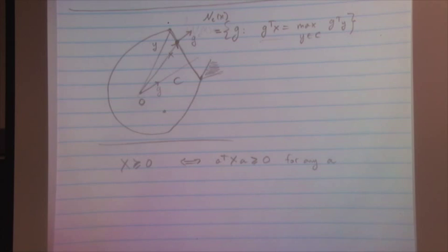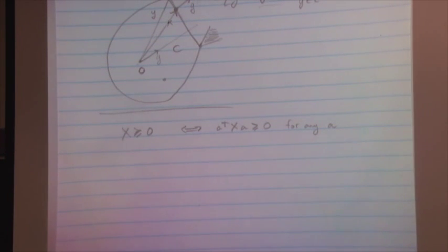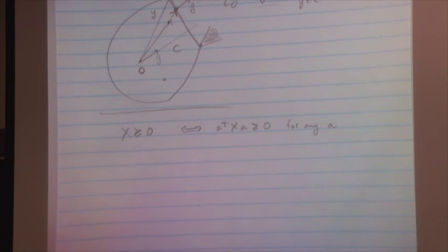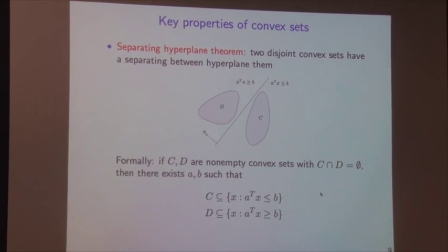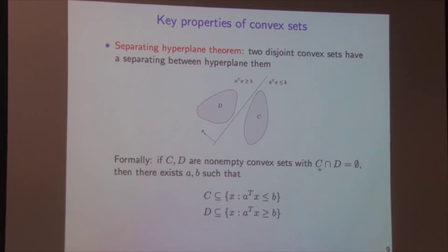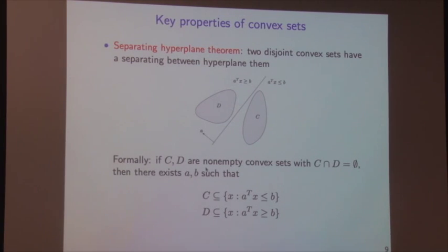Two more operations preserving convexity. Perspective images and pre-images: the perspective function P(x, z) = x/z takes a vector x and positive scalar z and divides x component-wise by z. If C is a convex set, its image under P is convex, and the pre-image of a convex set is convex. This is less obvious than the affine case but very useful.